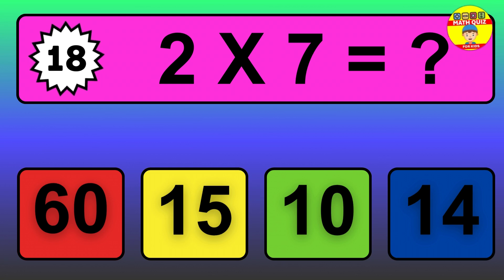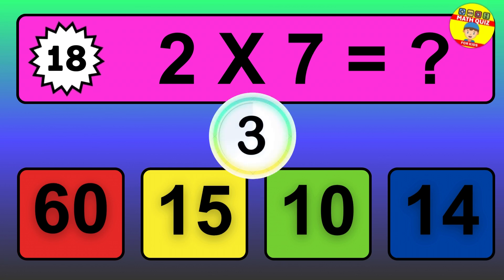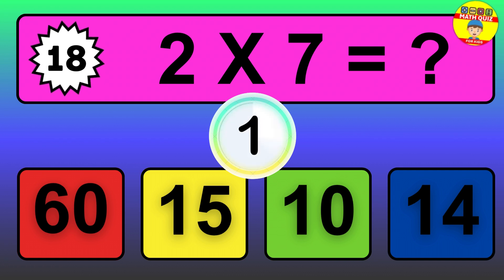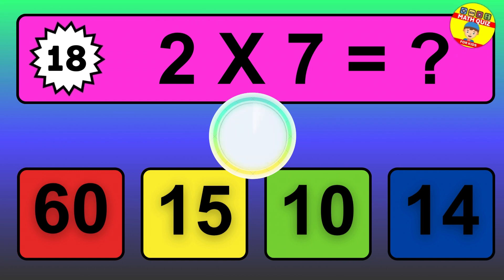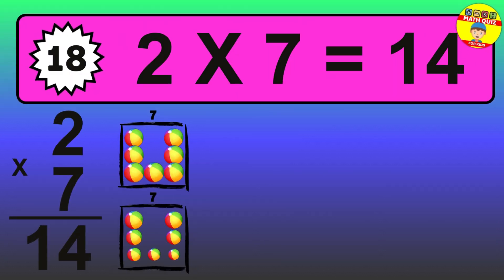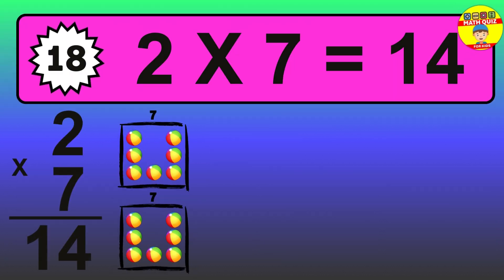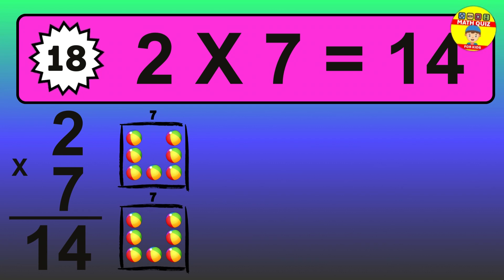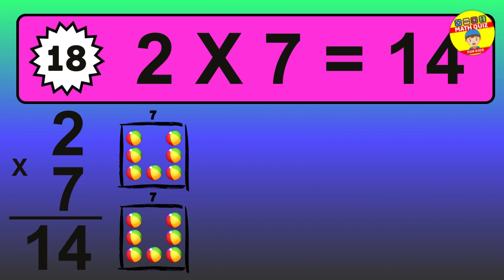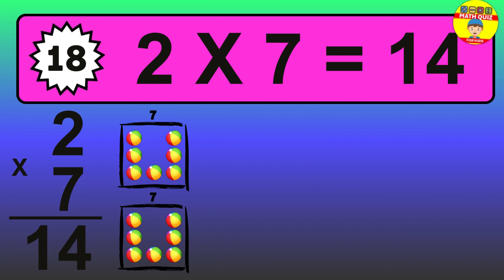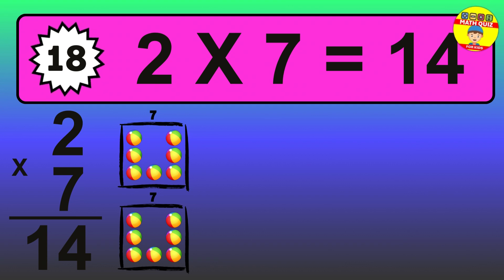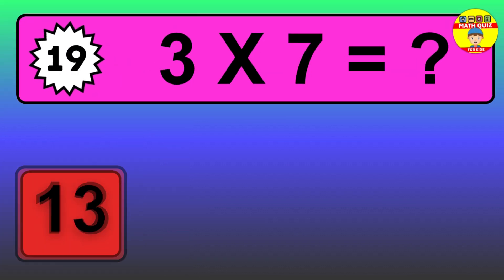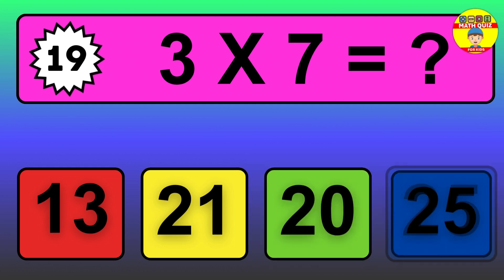Question 18. Two times seven equals what? The answer is two times seven is 14. To calculate, we have two groups with seven balls each one. So, how many balls do we have? 14 balls.